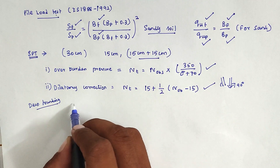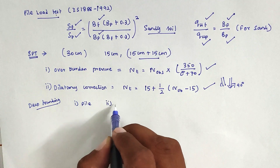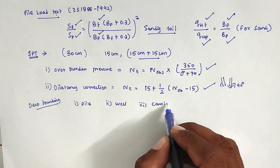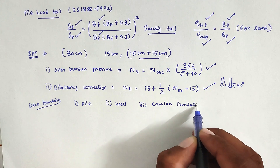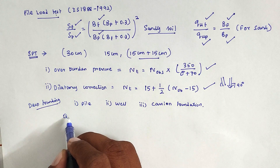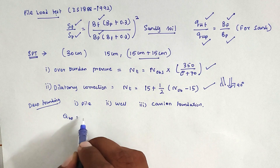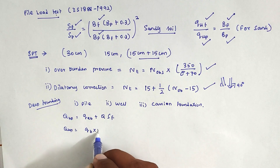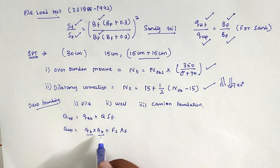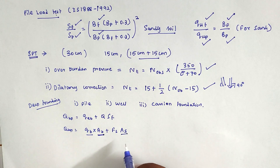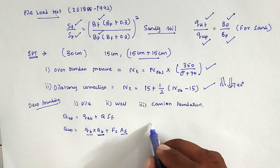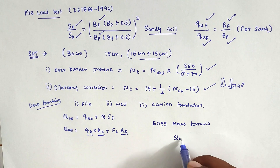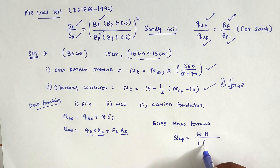In deep foundation, there are three to four types: pile foundation, well foundation, and caisson foundation. The ultimate bearing capacity of a pile is taken by the base resistance and skin friction: Q_UP = Q_EB + Q_S, or Q_UP = Q_B × A_B + F_S × A_S, where A_S is the surface area along the depth and A_B is the area at the tip. Using the engineering use formula: Q_UP = W × H / (6 × (S + C)).